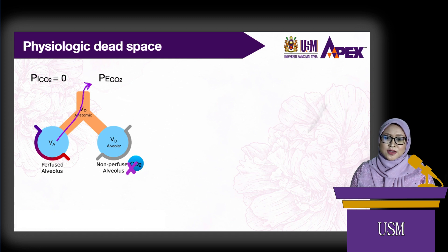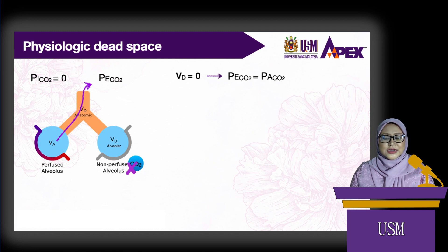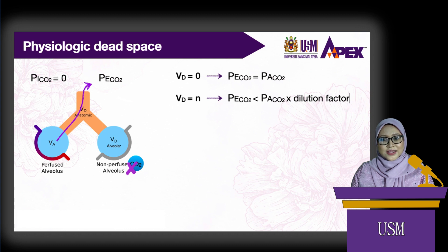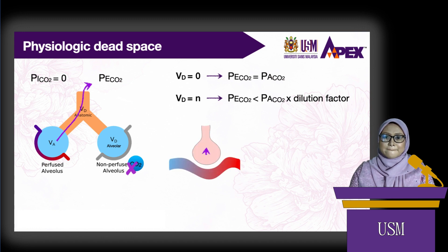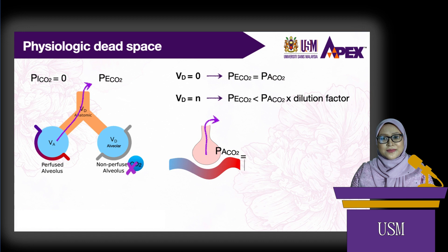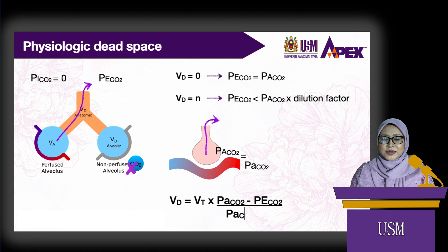If physiologic dead space is zero, then PECO2 will be equal to alveolar PCO2. However, if physiologic dead space is present, then PECO2 will be less than alveolar PCO2 by a dilution factor. Alveolar PCO2 cannot be sampled directly, but normally alveolar PCO2 is equal to PCO2 of the pulmonary capillary blood as well as systemic arterial blood. So using these assumptions, the volume of physiologic dead space is the tidal volume multiplied by arterial PCO2 minus PCO2 of the expired air, divided by arterial PCO2.